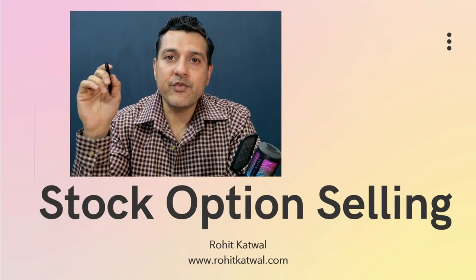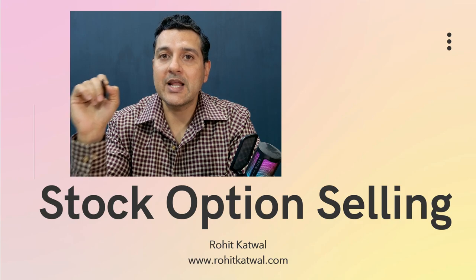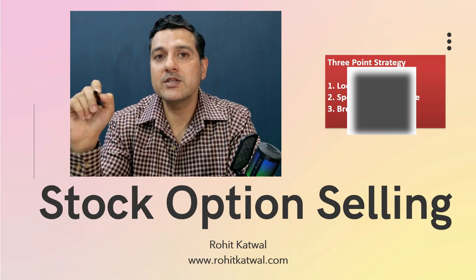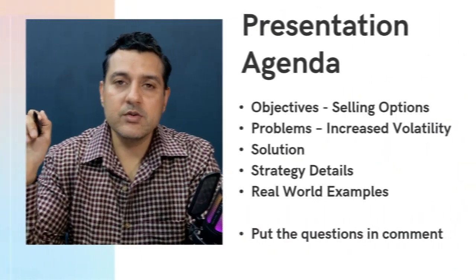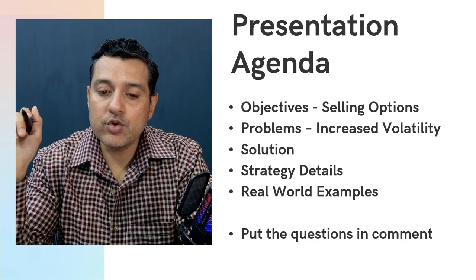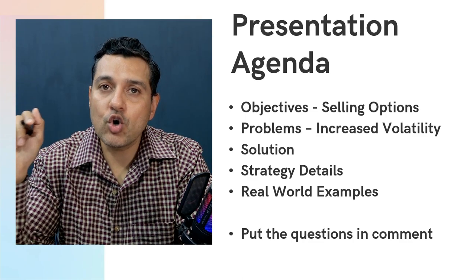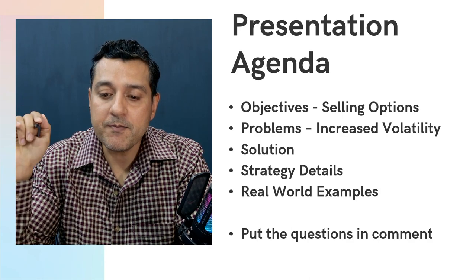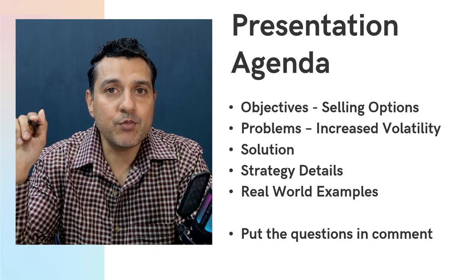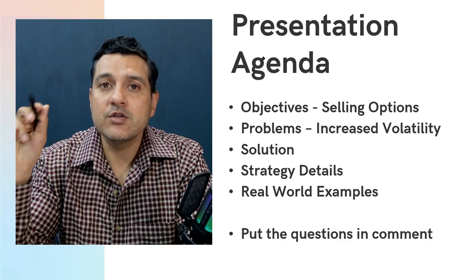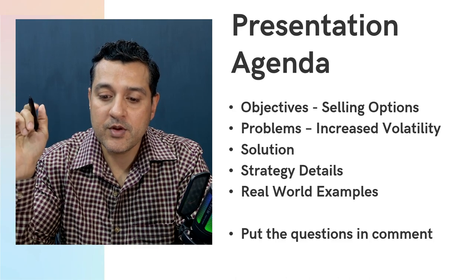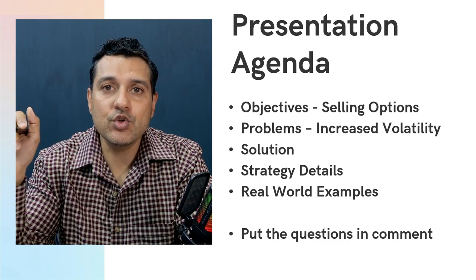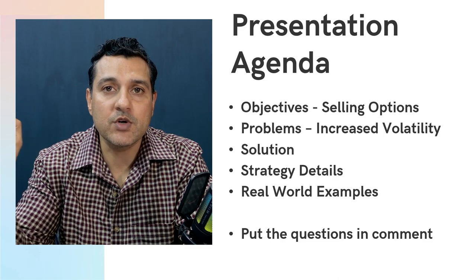Today I am going to discuss my favorite swing trading strategy for option selling. In this video, I am going to share a three-point strategy on how I select options, so do watch this video till the end. This is the agenda of our presentation: we are going to discuss our objective of selling stock or index options, the problem of increased volatility, what is our solution, and finally the three-point formula we use to sell options. We'll also take real-world examples and real trades so you can clearly understand how to execute this strategy.